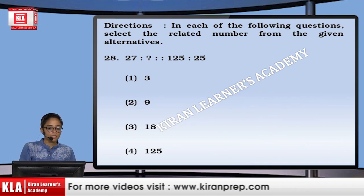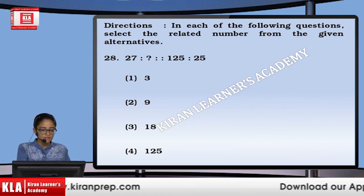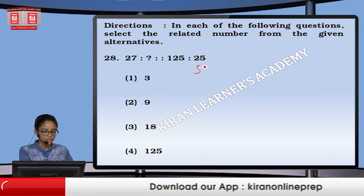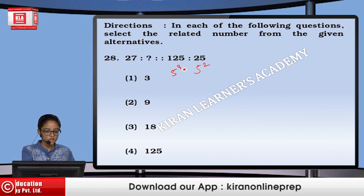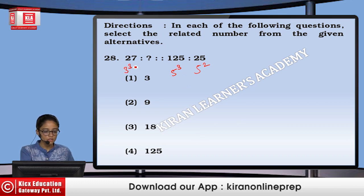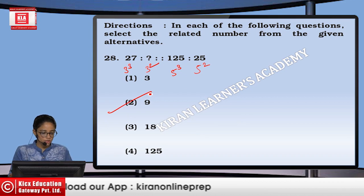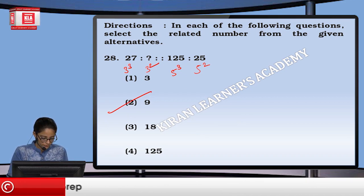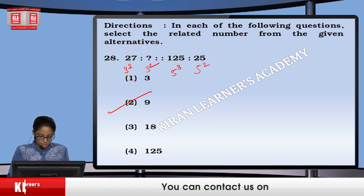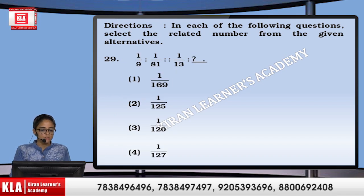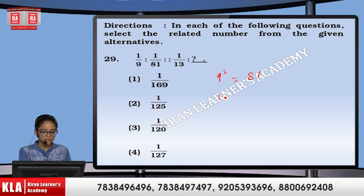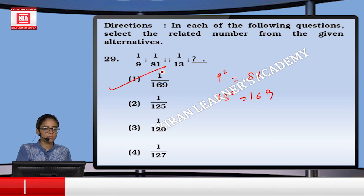Next, 27 and 125. If I talk about 25 — it is 5 squared, then 5 cubed is 125. Similarly, 27 is 3 cubed, so we are going to write 3 squared, which is 9. That means option number 2. Next, 9 squared is 81. Similarly, 13 squared will be 169 — that means option number 1.